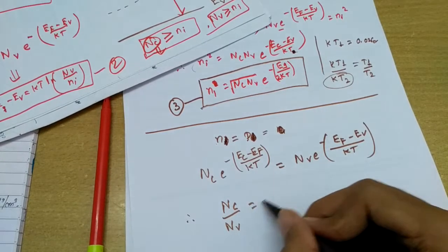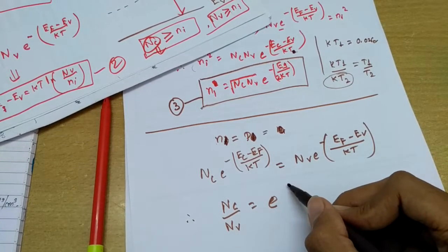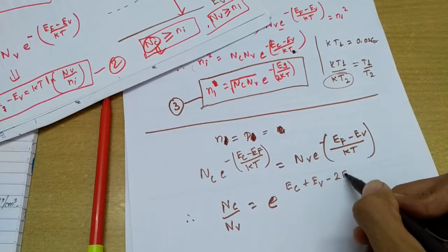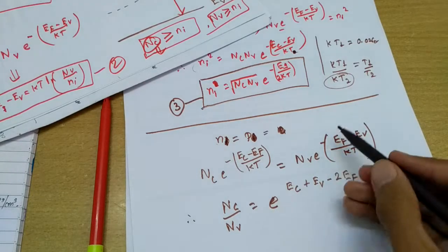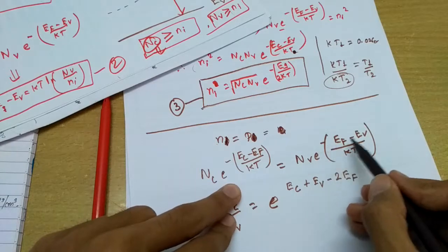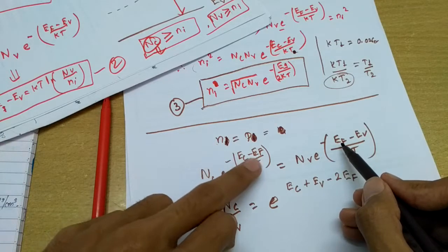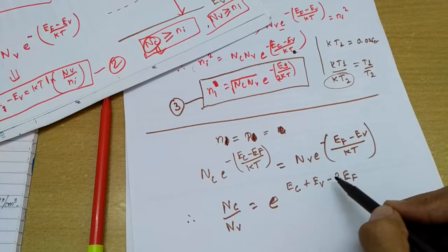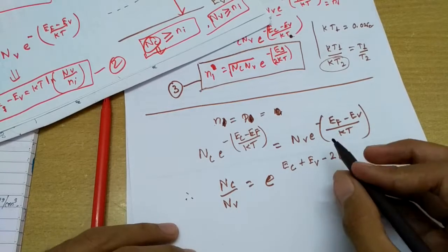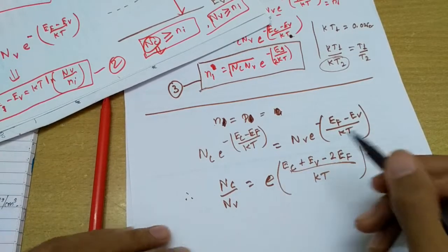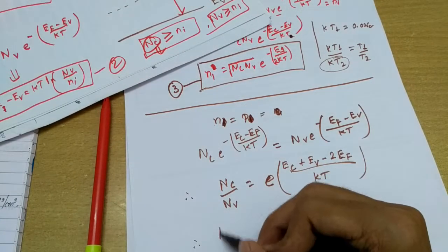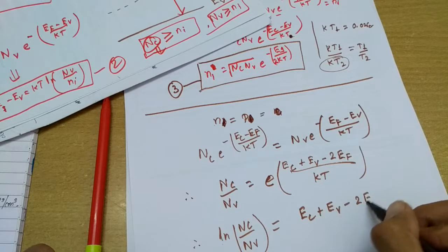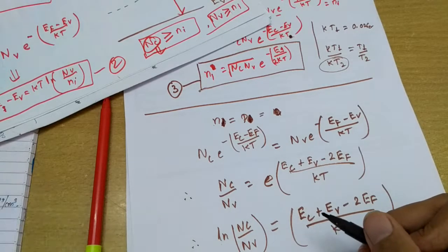Rearranging, nc/nv = e^((Ec + Ev - 2Ef)/kT). Taking the natural log on both sides: ln(nc/nv) = (Ec + Ev - 2Ef)/kT.